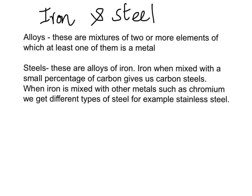Alloys are much more useful than pure metals. Steels are iron alloys — alloys of iron where iron is mixed with a small amount of carbon, giving us carbon steels. When iron is mixed with other metals such as chromium in carefully chosen proportions, we get different types of steel, for example stainless steel. We are going to be looking at these main types of steel, their properties, and uses in this lesson.